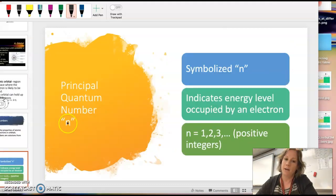The first quantum number is N. It's called the principal quantum number. It's the main one. It tells you the energy level that the electron's in. N can be 1, 2, 3, and so on, positive integers.